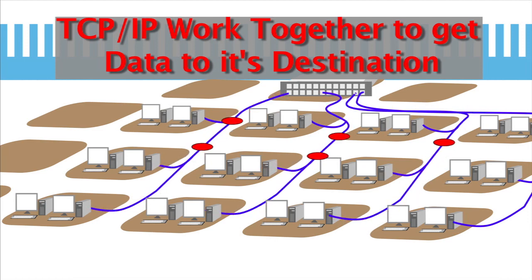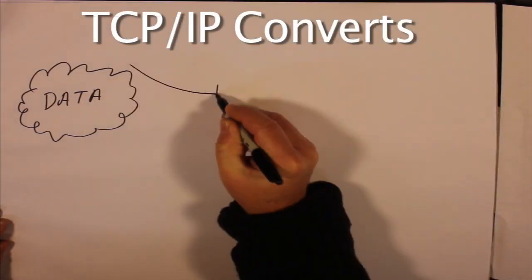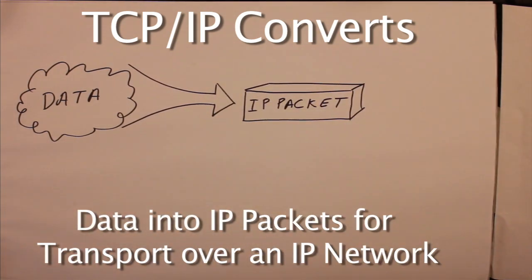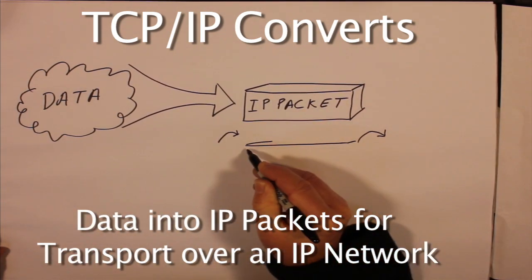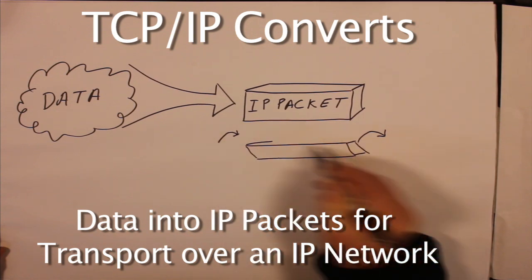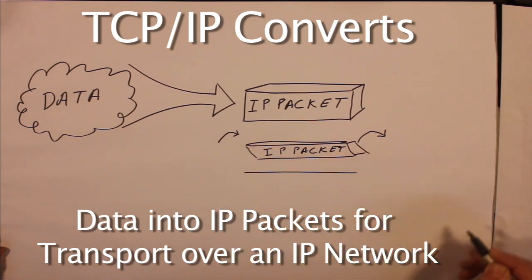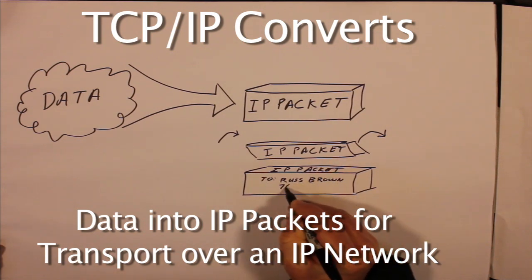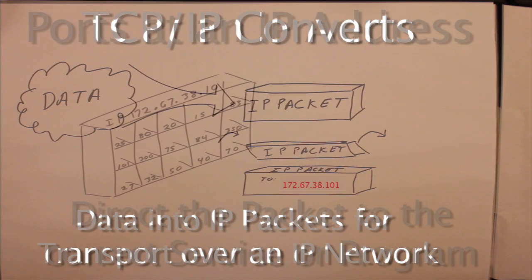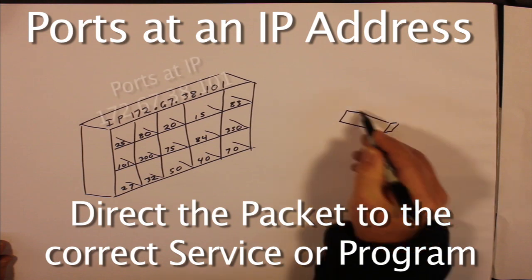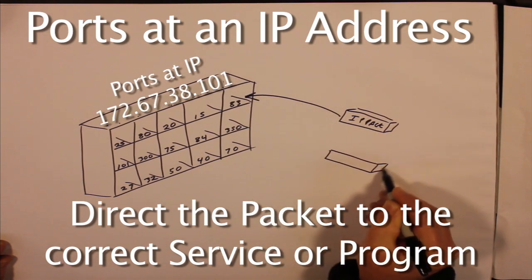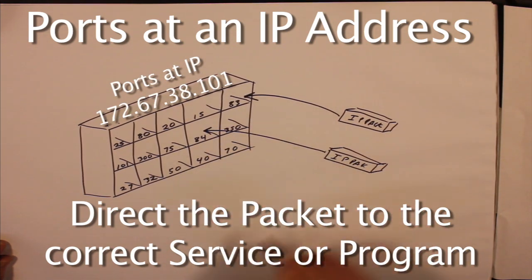This includes formatting the data into the required size and structure, providing unique addresses for each device on the network so that the data knows where to go, network messages to be sent back and forth to coordinate the flow of data, and to provide for different ports, or portals, on each device that accept the different types of data sent to it so that they can be processed and responded to correctly.